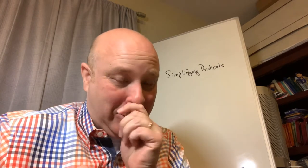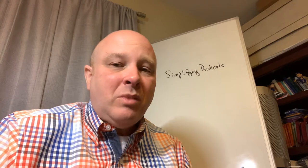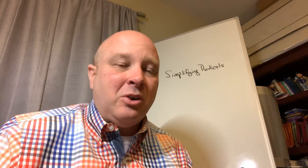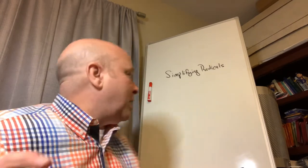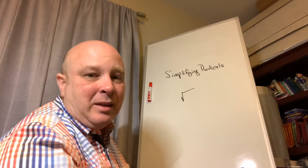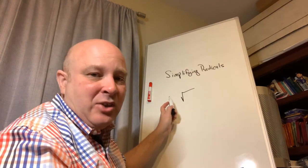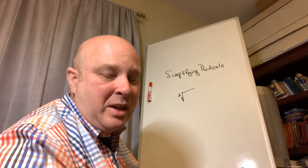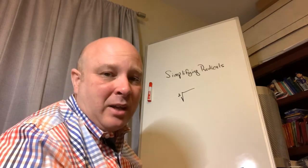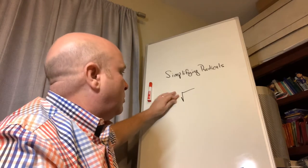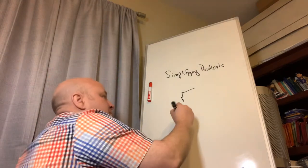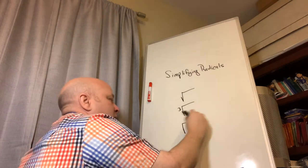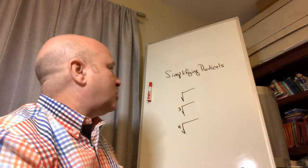In today's assignment we're just going to deal with square roots, but that's not the only kind of root you can have. In real life you're probably going to see three different radicals: the square root — that little house-looking symbol with no number next to it (you can pretend there's a tiny 2 there) — the cubic root, which always has a 3, and the fourth root, which has a 4.